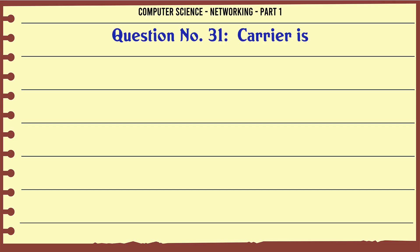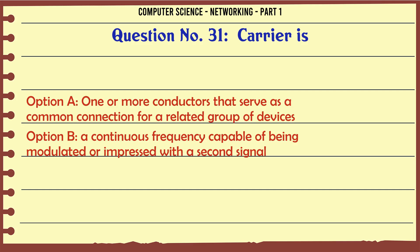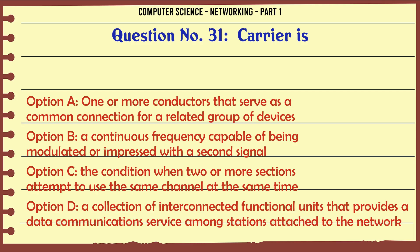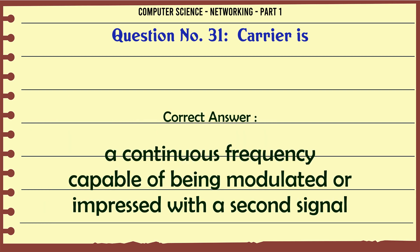Carrier is: A. One or more conductors that serve as a common connection for a related group of devices. B. A continuous frequency capable of being modulated or impressed with a second signal. C. The condition when two or more sections attempt to use the same channel at the same time. D. A collection of interconnected functional units that provides a data communications service among stations attached to the network. The correct answer is: A continuous frequency capable of being modulated or impressed with a second signal.